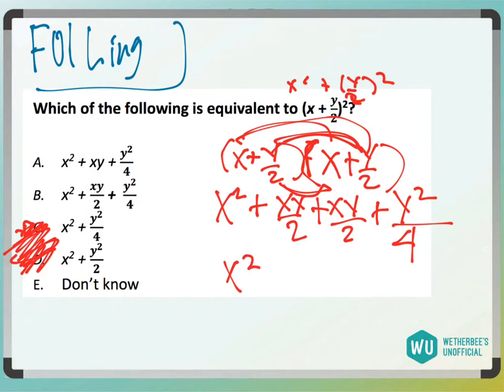So now we combine our middle terms and we'd have x squared plus 2 xy over 2. We have 1 here and then 1 here and then plus y squared over 4. This would cancel out and you just get x squared plus xy plus y squared over 4. It would be answer choice A.